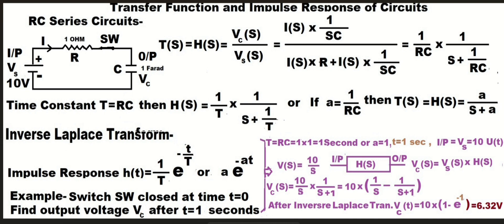Then impulse response H(S) equals 1 upon T multiplied by 1 upon S plus 1 upon T. Or if we put a equals 1 upon RC, then impulse response equals a upon S plus a.